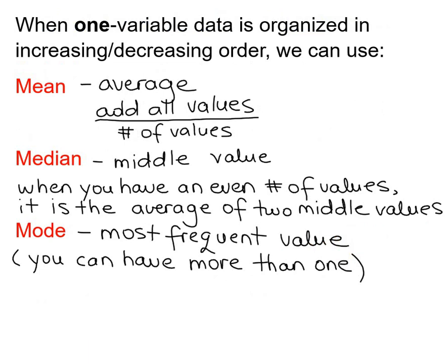When one variable data is organized in increasing or decreasing order, we can use mean, which is the average. Add all the values and divide by the number of values. The median, which is the middle value.